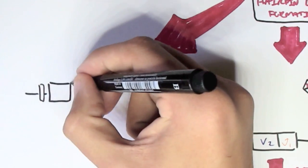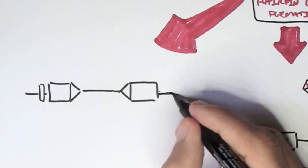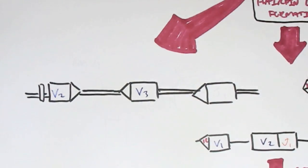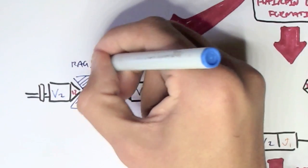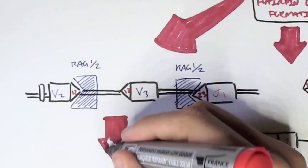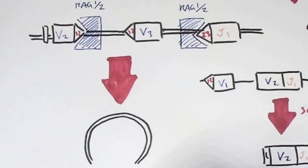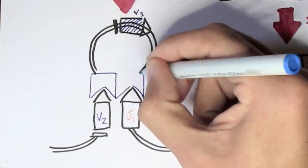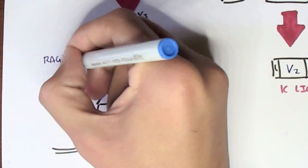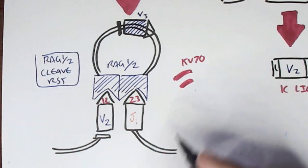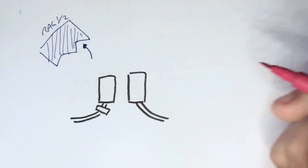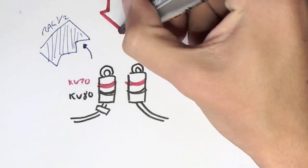The proteins involved in recombination are essentially the same for both heavy and light chain genes. Taking the kappa light chain gene as an example with V2, V3, and J1: the first step is that RAG1 and RAG2 proteins bind to the RSS motifs — the 12 bp spacer and 23 bp spacer. RAG1 and RAG2 have affinity for each other, causing them to come together and form a hairpin loop with V2 and J1 parallel.